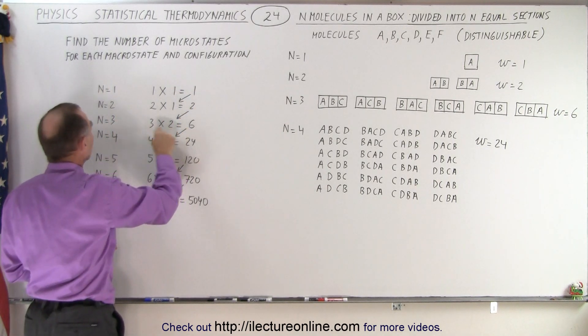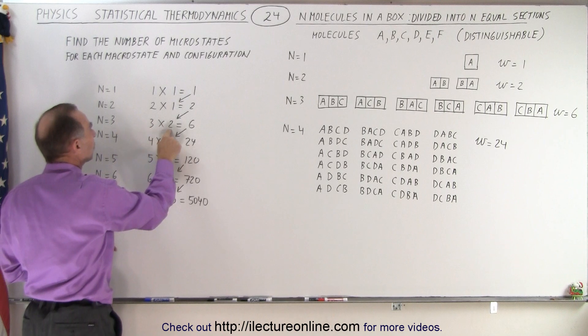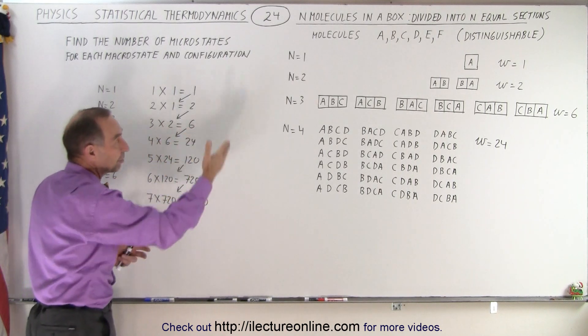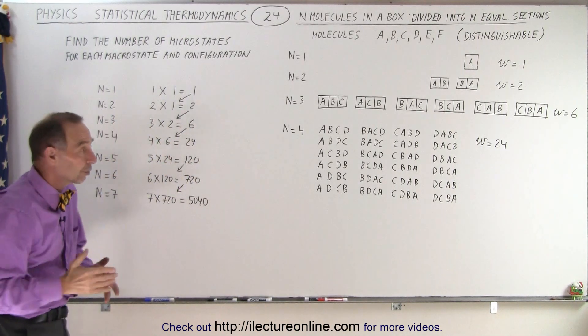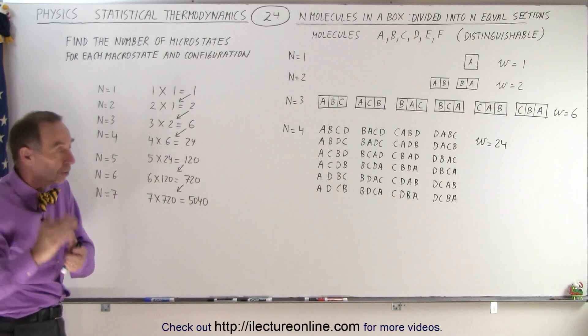Then we bring the 2 over here. n becomes 3. 3 times 2 equals 6. Six microstates for the case where there's three molecules and three partitions. Again, one molecule in each partition.